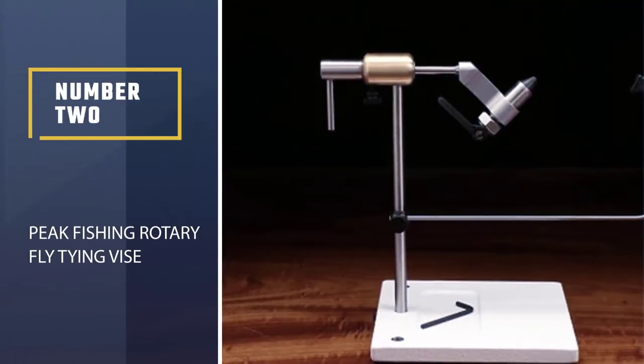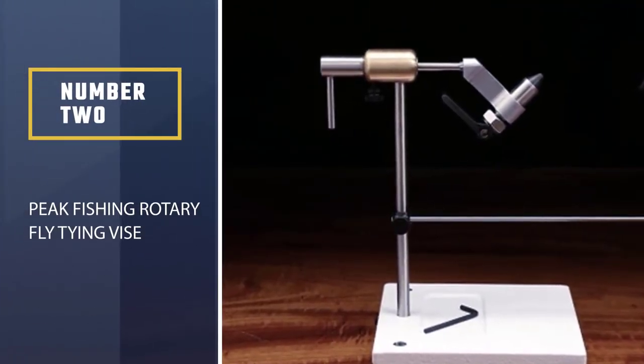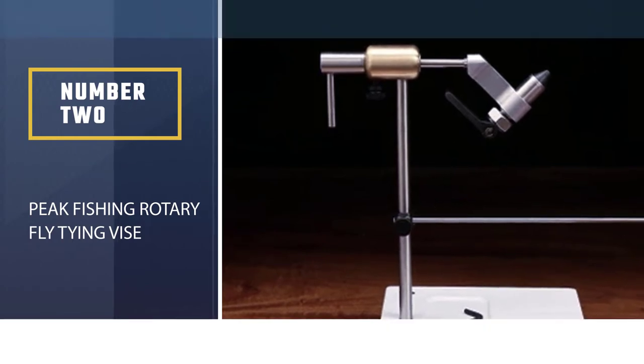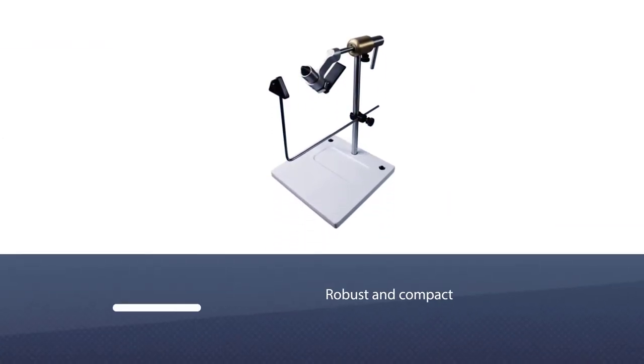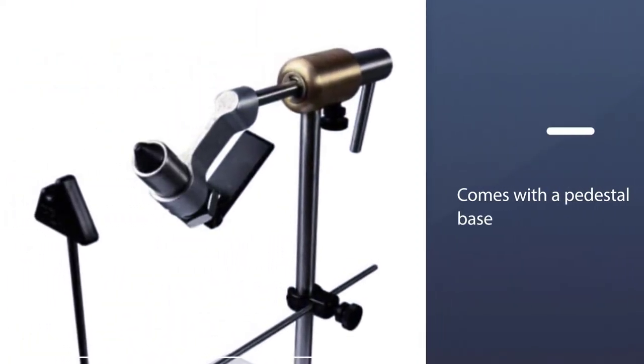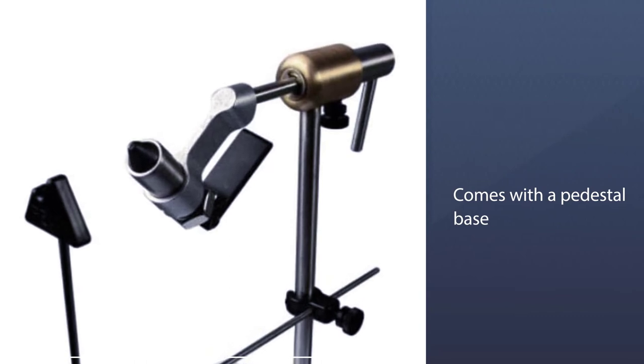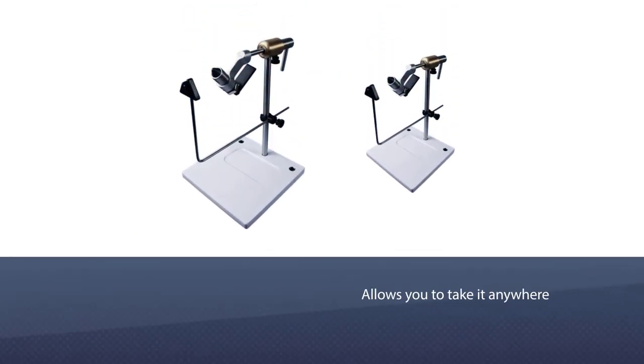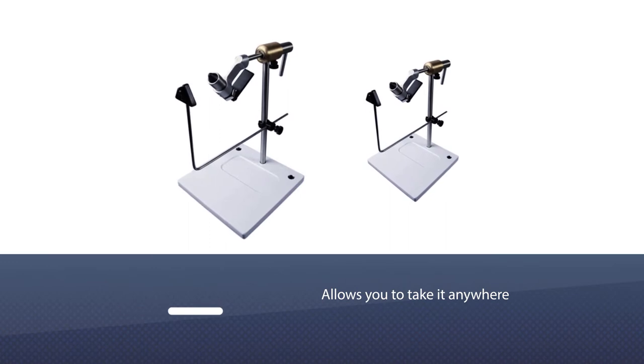Number 2, Peak Fishing Rotary Fly Tying Vise. If you've got your heart set on a rotary vise but you're on a tight budget, check out the Peak Fishing Vise. It's robust and compact, with a pedestal base that allows you to take it anywhere. It also comes in a C-clamp model, if you prefer a stationary vise for your home fly tying station.